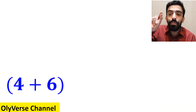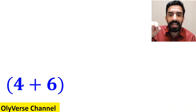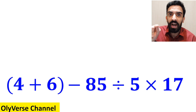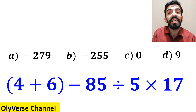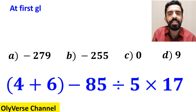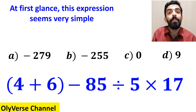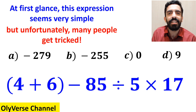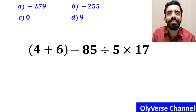What is the value of the expression (4 + 6) minus 85 divided by 5 times 17? Which option do you think is the correct answer to this question? At first glance this expression seems very simple, but unfortunately many people get tricked. Let's go step by step and solve it together.